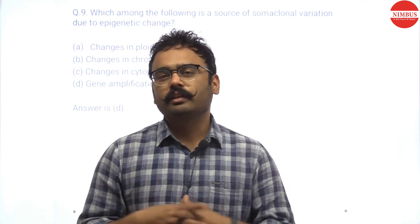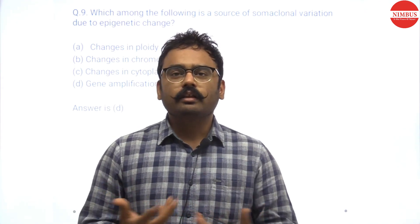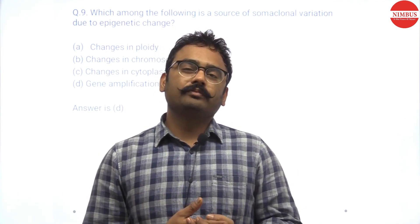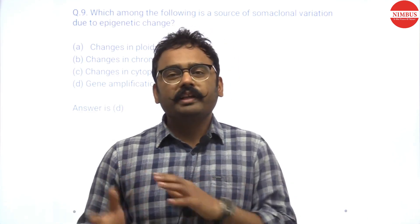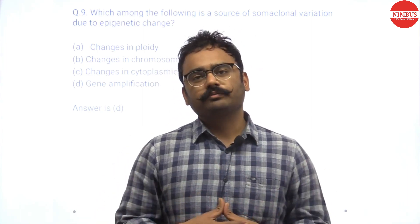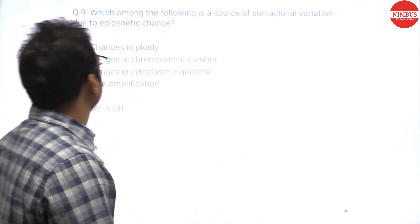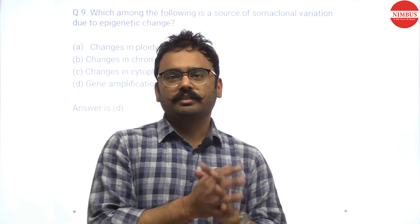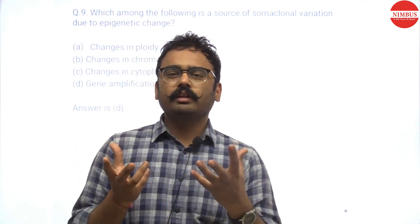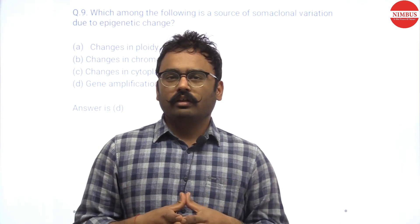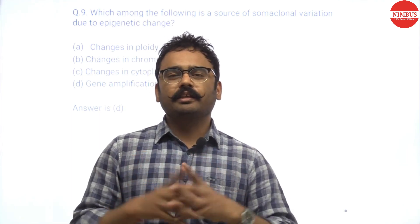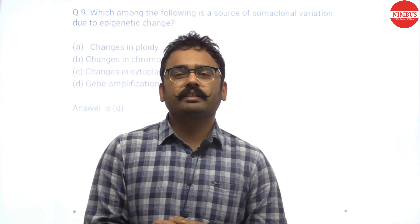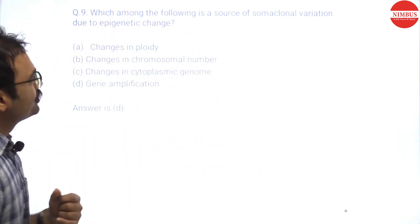The ninth question is about somaclonal variation — variation in the clones made in tissue culture, caused when mutations occur and the sequence changes in some plantlets. The question asks which is a source of somaclonal variation due to EPIGENETIC change. Epigenetic change means the sequence is NOT being changed — it could be histone modification or DNA methylation (capping of DNA with a methyl group).